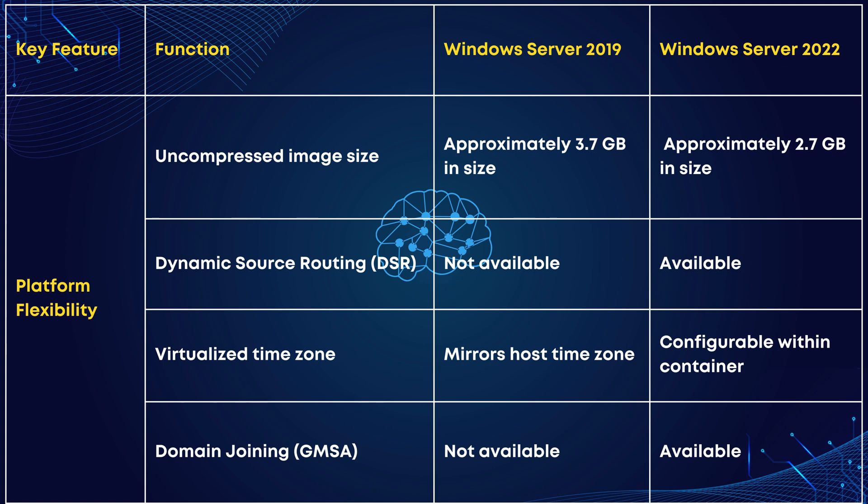Now let's compare platform flexibility. Starting with uncompressed image size: reducing the size of the OS image might sound simple, but it leads to more efficient storage utilization and faster deployment of virtual machines. It's all about optimizing resources for better performance.